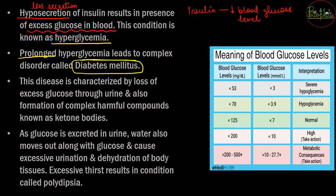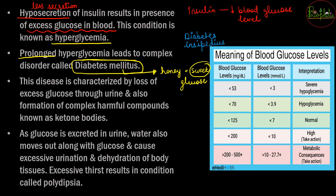Diabetes mellitus — the word 'mellitus' is related to honey, and honey is sweet, which relates to glucose. Diabetes mellitus is a disorder related to glucose levels in the blood. This is different from another disease, diabetes insipidus, which was covered in the previous video on adrenal gland and has no relation to glucose.